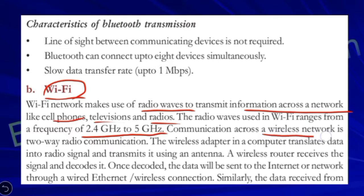Wi-Fi communication works as two-way radio communication. How do we use the internet? A user accesses the internet through a system that transfers data. The device in our computer — a wireless adapter — converts data into radio signals. These radio signals are transmitted to a wireless router, which receives and decodes them and connects to the internet.